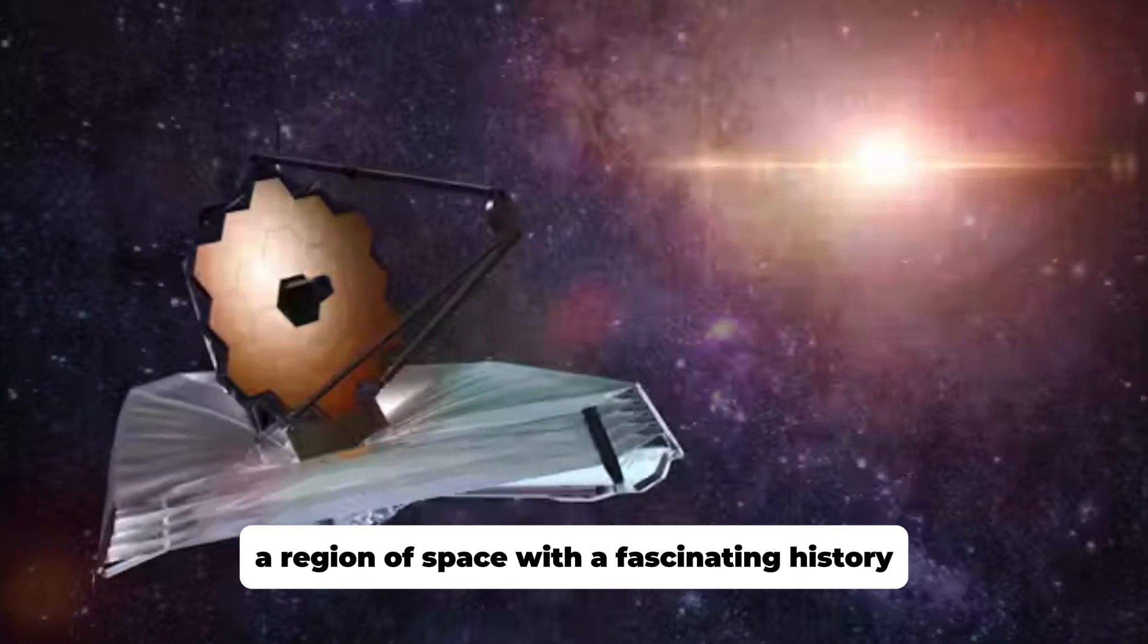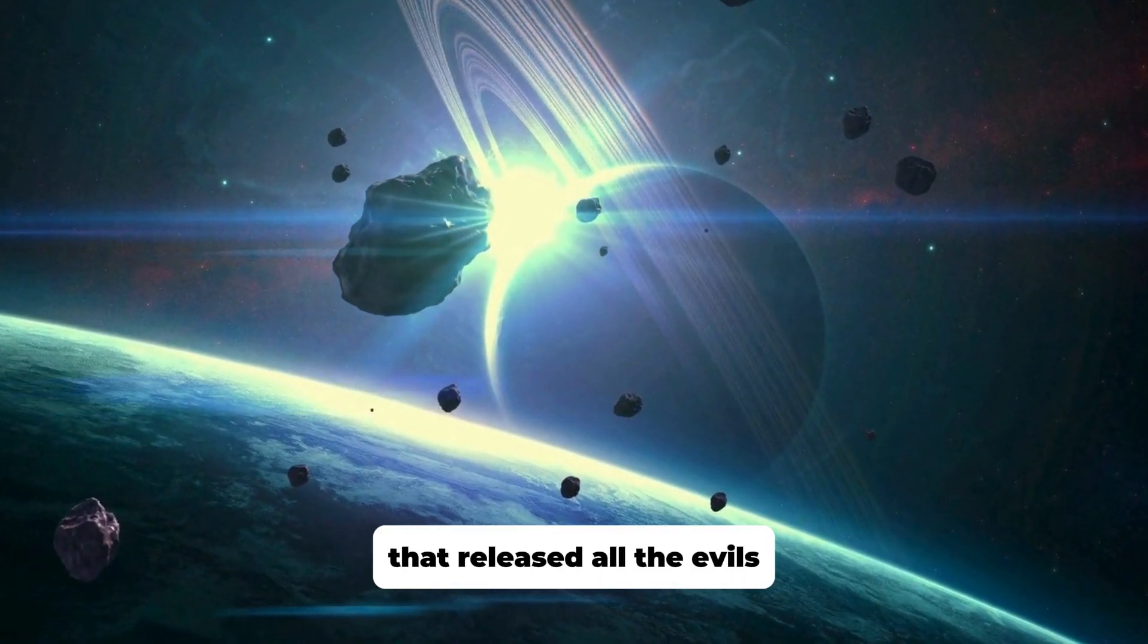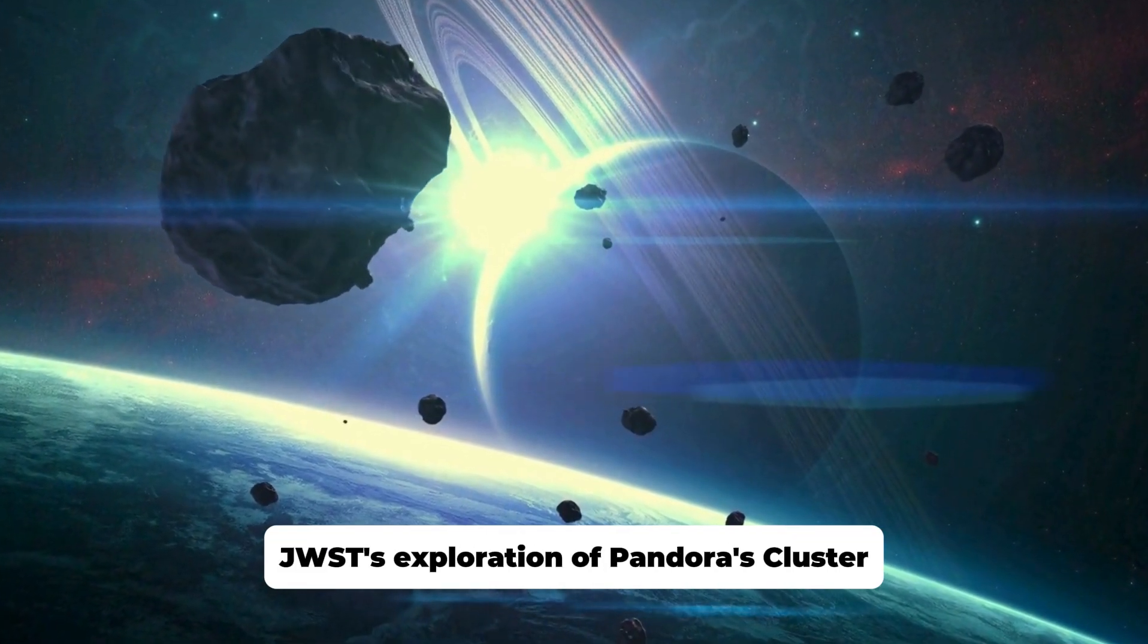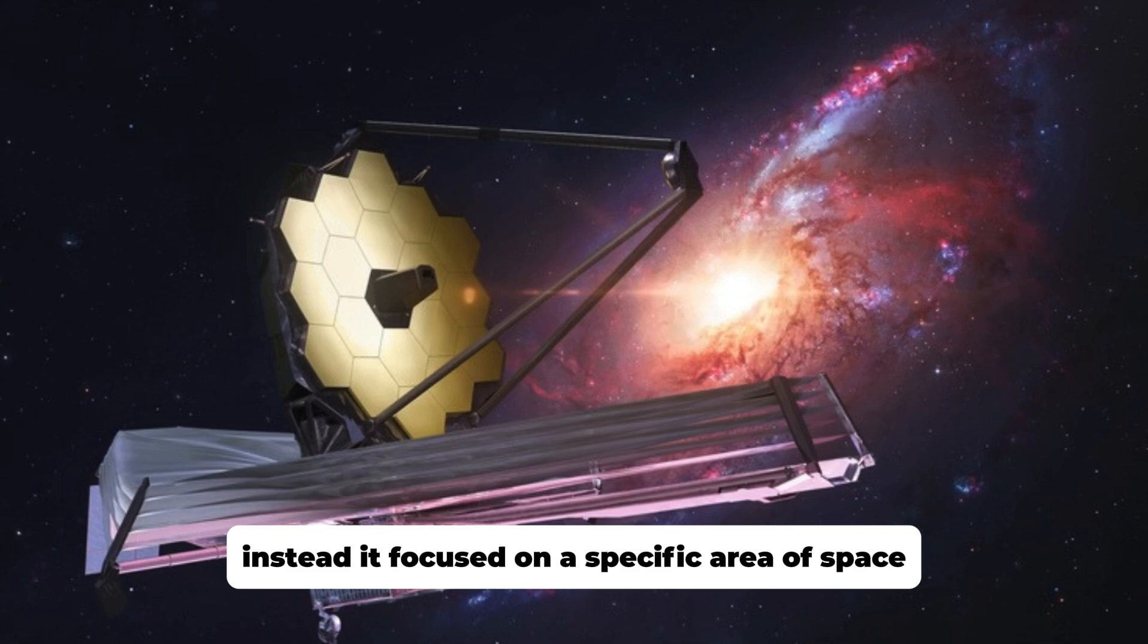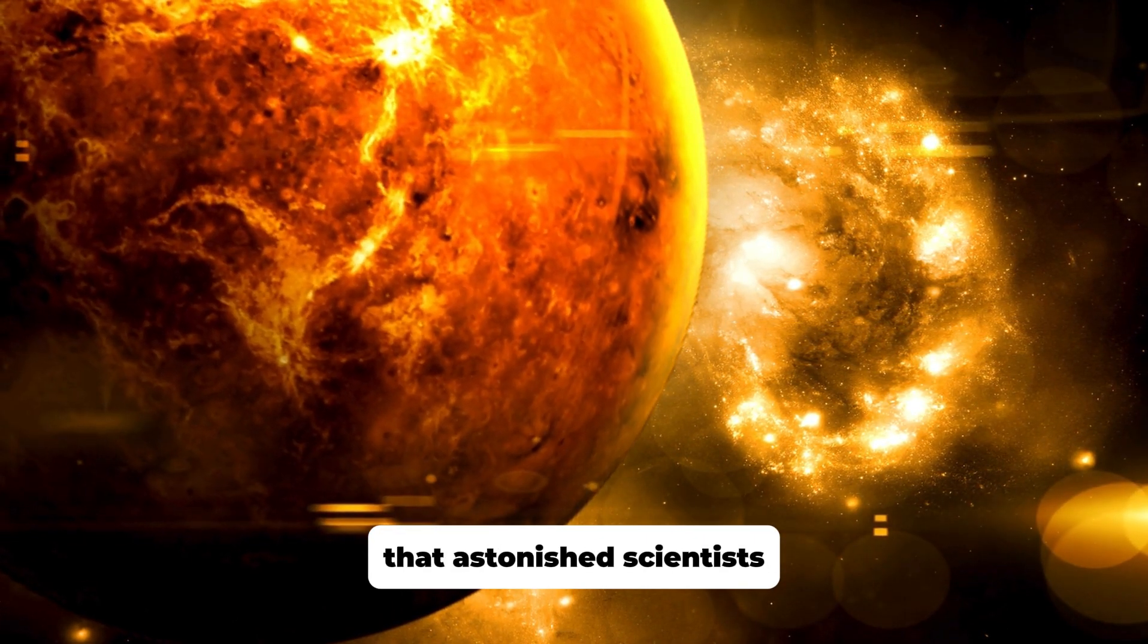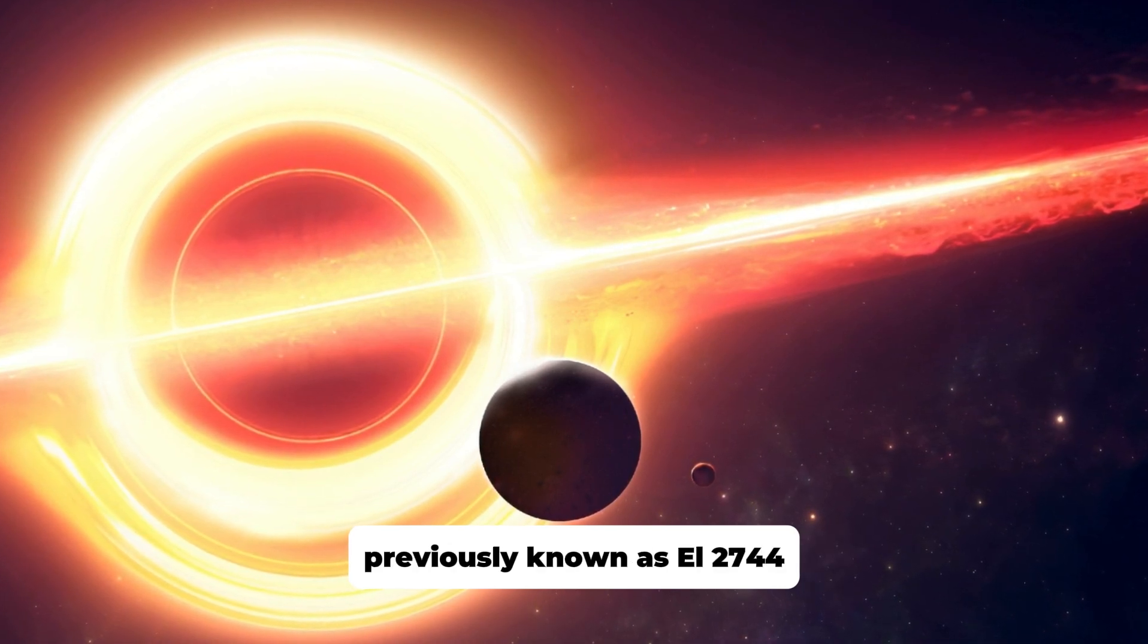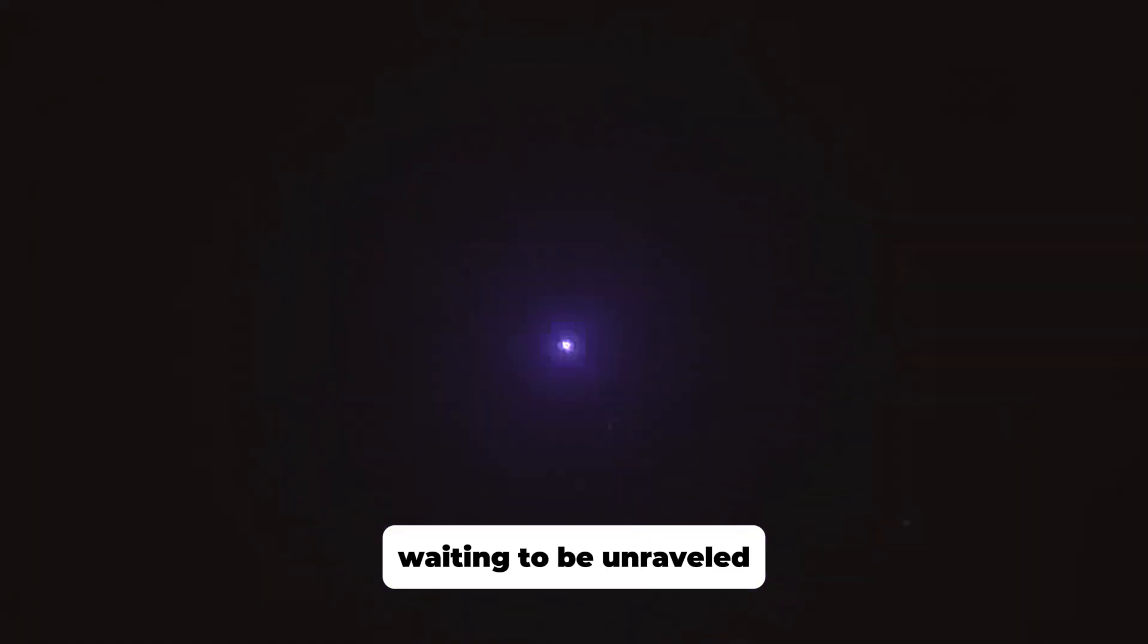But the JWST wasn't about to rest on its laurels just yet. In another captivating image, the James Webb Space Telescope turned its attention to Pandora's Cluster, a region of space with a fascinating history. Named after the mythological figure from Greek mythology, Pandora, who is believed to have opened a container that released all the evils and hardships into the world, JWST's exploration of Pandora's Cluster did not unleash any evils. Instead, it focused on a specific area of space using a theory proposed by Albert Einstein in 1915, resulting in a stunning image that astonished scientists. This new image of Pandora's Cluster, previously known as Abell 2744, revealed unseen details.